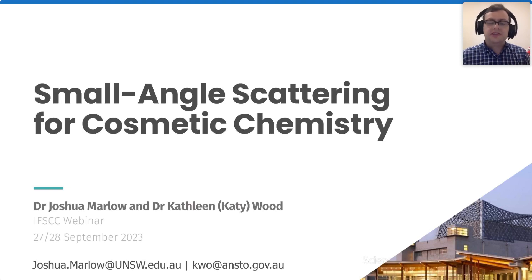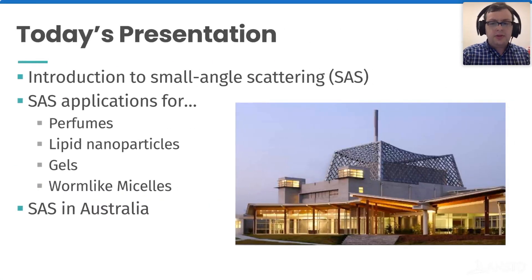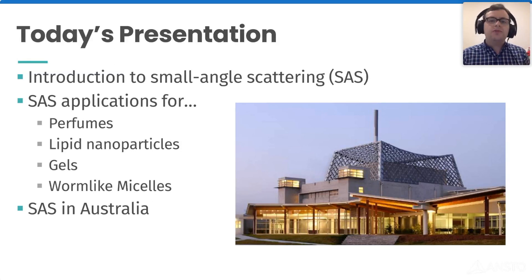This work involves ANSTO, which is Australia's nuclear science and technology organization, which has ownership over Australia's nuclear reactor used for research purposes as well as medical isotopes — not for power. Today's presentation will cover: what is small angle scattering, its applications in areas relevant to cosmetic chemistry, and how to access small angle scattering. Though this is Australia-focused, many countries have their own reactors, synchrotrons, and lab-based SAXS instruments, so it can be extrapolated to wherever you are.